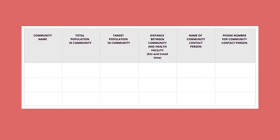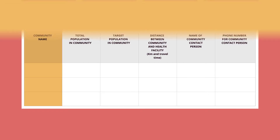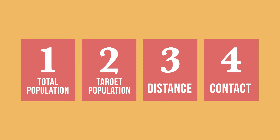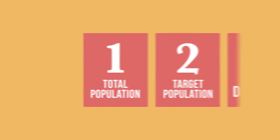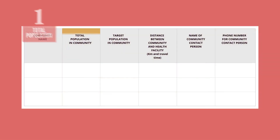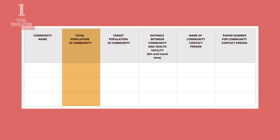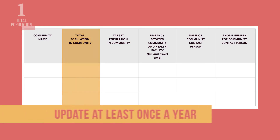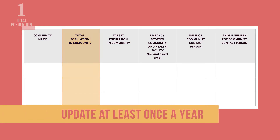Create a table like this one. List all the communities and populations within your catchment area. To complete the rest of the table, here is the information you will need to gather. First, the total population of each community. Remember to update population data at least once a year.